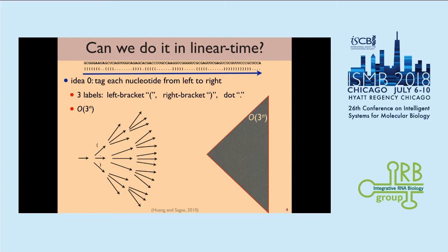Thinking about the secondary RNA structure, we can see that every nucleotide has three different possible labels. You can mark a left bracket or a right bracket — they're pairing together — or a dot. So for every nucleotide, if we take one of these three actions, we can actually predict the secondary structure from left to right, instead of the conventional bottom-up method. The naive baseline would be 3^n — for every nucleotide you explore three different actions, giving exponential time cost.